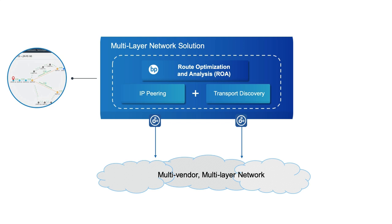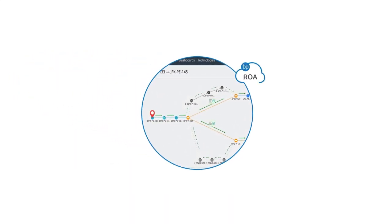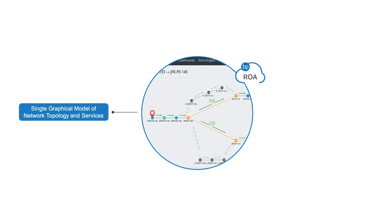With a full stack view of the network, multi-layer network analysis, planning and fault resolution can be carried out in a tightly coordinated way. The result of this combination is a unified network model that can be visualized in a single graphical view, showing transport network topology and services, and displaying it correlated to IP paths.